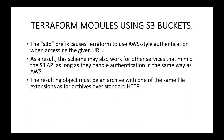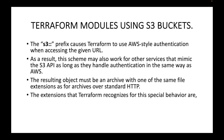The resulting object must be an archive with one of the same file extensions as for archives over standard HTTP. Unlike the GitHub example where configuration files were stored directly in the repo, with S3 buckets you have to create an archive — the configuration files should be inside an archive, and that is what you provide as the source.